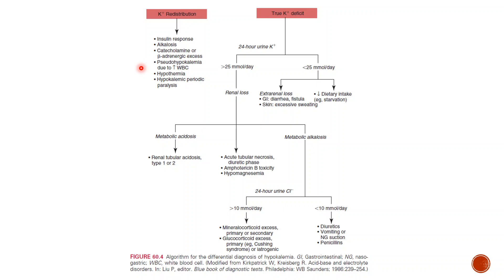For true potassium deficit, we must first determine whether loss is renal or non-renal by measuring urinary potassium. A 24-hour urine sample is more accurate. If the 24-hour urinary potassium is more than 25 milliequivalents per liter, the kidneys are responsible. If less than 25, the cause is non-renal — such as GI losses like diarrhea, skin losses, or decreased potassium intake.